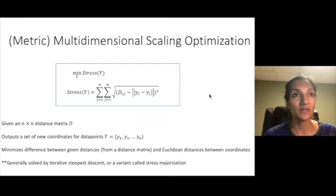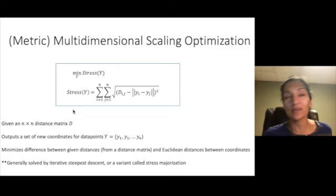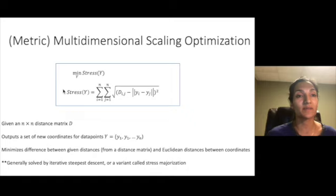Once you have this matrix we can define what multi-dimensional scaling is. Multi-dimensional scaling finds new projections of data or coordinates for data points such that a quantity called stress is minimized. This means that in these new coordinate representations the Euclidean distance is similar to the distance in the given distance matrix and remember that could be the only thing that was given was the distance matrix. Normally this is solved using greedy optimization methods such as iterative steepest descent or a variant called stress majorization.